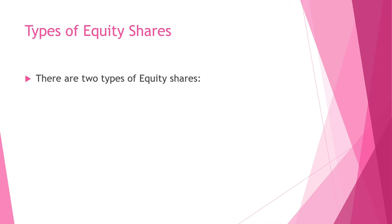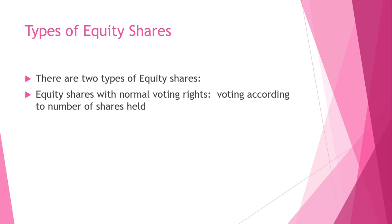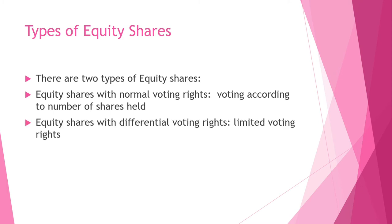There are two types of equity shares. First, equity shares with normal voting rights — the voting rights given are according to the number of shares held; for example, if a shareholder holds 500 shares, they have 500 voting rights. Second, equity shares with differential voting rights — these shares have limited voting rights, and shareholders may be offered an extra dividend. This is as per Rule 4 of the Companies (Share Capital and Debentures) Rules 2014.